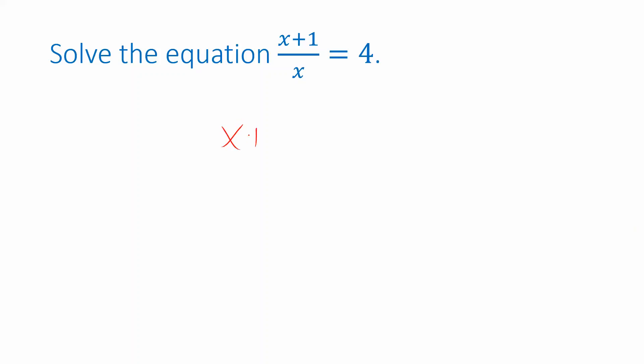So if I start with x plus 1 over x equals 4, to get this x out of the denominator, I will multiply both sides by x. These factors cancel, leaving me with x plus 1 over 1. I'll just write that as x plus 1. And I have 4x on the right. Now I have a linear equation I can solve. For example, if I subtract x from both sides, I get 1 equals 3x, and then divide both sides by 3 to get x is 1 third.